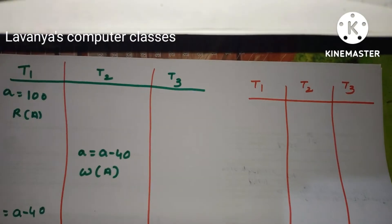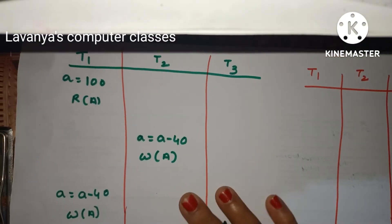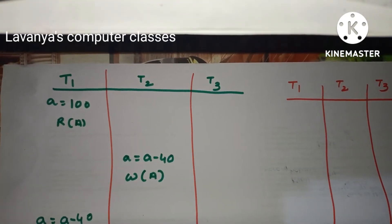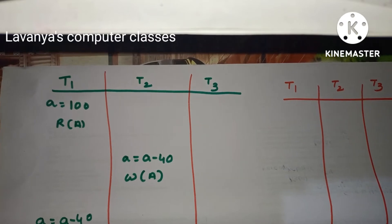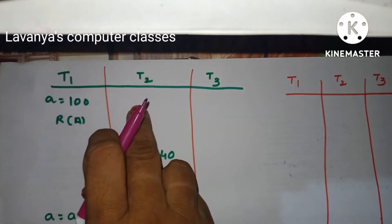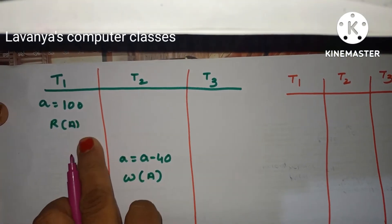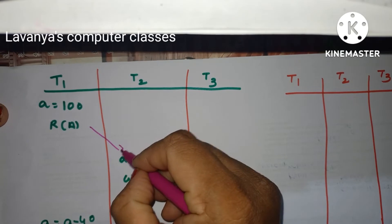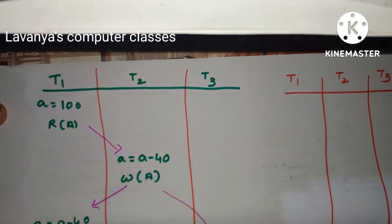I will take three transactions T1, T2, T3. This is a parallel, non-serial schedule. In this schedule, first T1 started, then T2, then back to T1, and then T3.